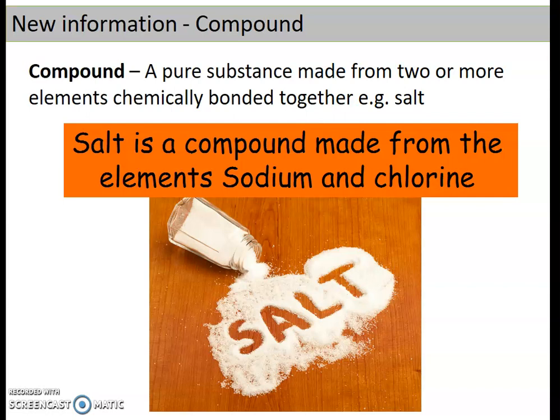A compound is a pure substance made from two or more elements chemically bonded together. It's really important when you're asked to define what a compound is that you say it's chemically bonded together — if you just say they're joined together, it doesn't mean the same thing. So make sure you use that key phrase: chemically bonded. Salt is an example, and it's made from sodium and chlorine — that's the salt you would put on your fish and chips. It is the same salt, so that is an example of a compound.